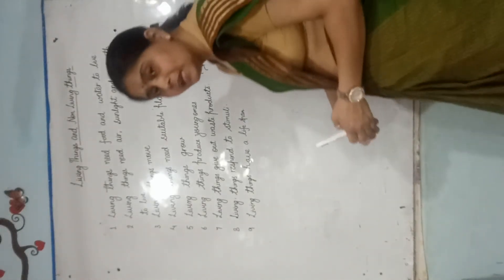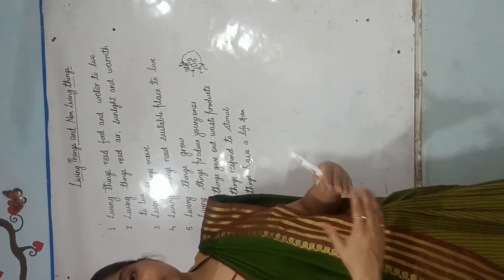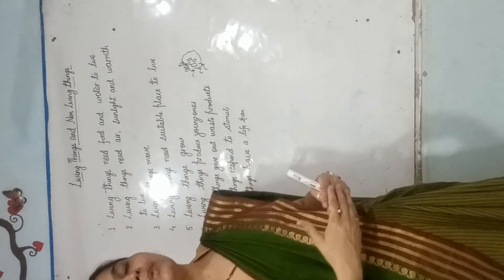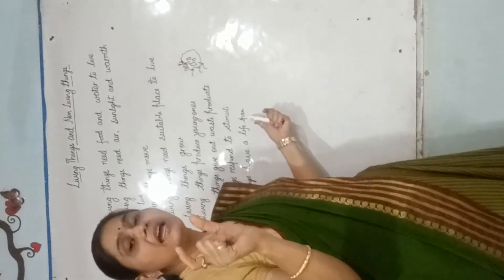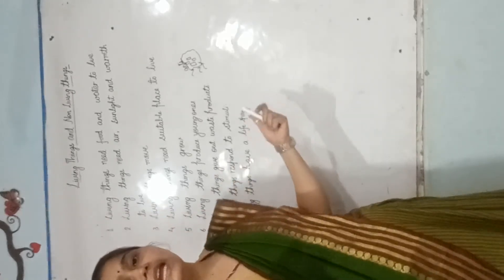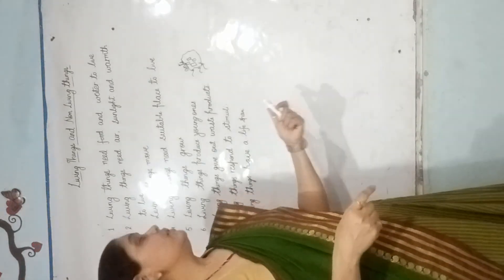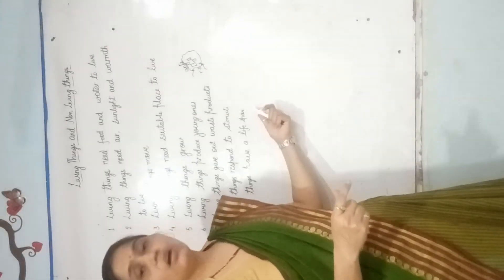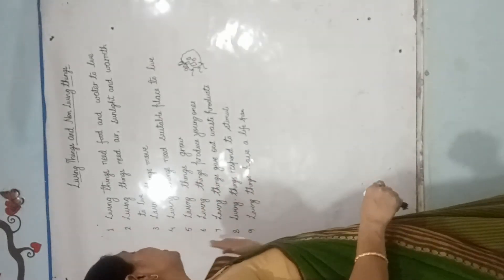Now, living things have a life span. जो living things होती है, इनके पास एक particular life span होता है — जैसे हम कहते हैं ना कि कोई भी इंसान अमर नहीं होता. बच्चे बड़े होते हैं, बड़े होने के बाद बूढ़े होते हैं, बूढ़े होने के बाद die out हो जाते हैं. तो living things की एक particular life span होती है, और वो उतने time तक ही survive करते हैं.